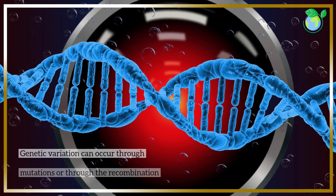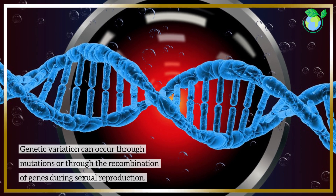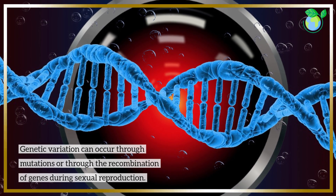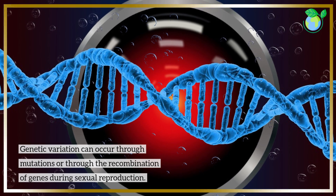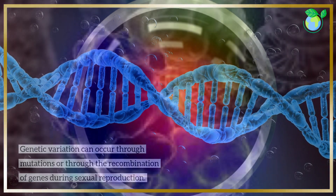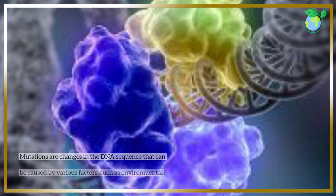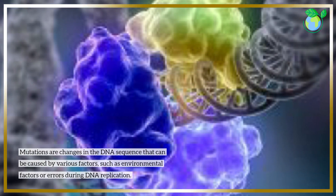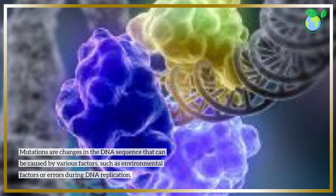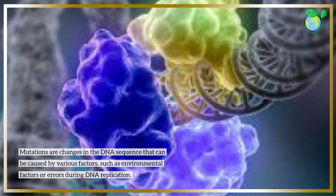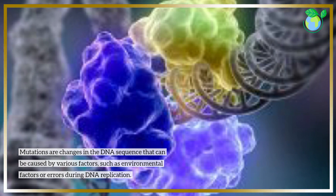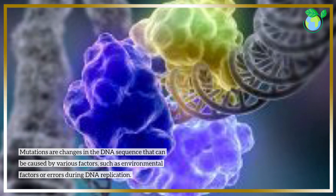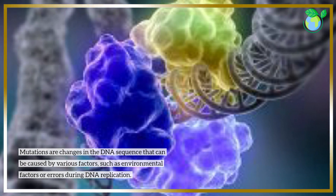Genetic variation can occur through mutations or through the recombination of genes during sexual reproduction. Mutations are changes in the DNA sequence that can be caused by various factors, such as environmental factors or errors during DNA replication.